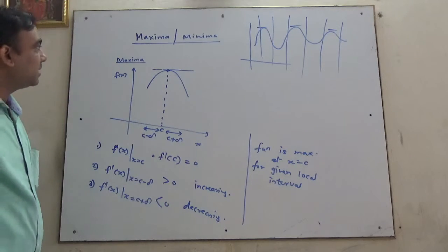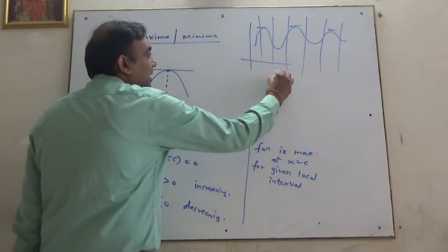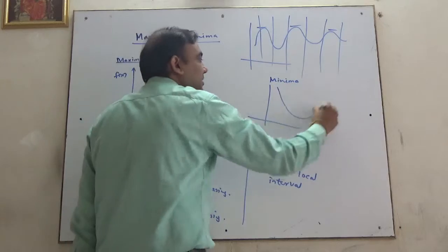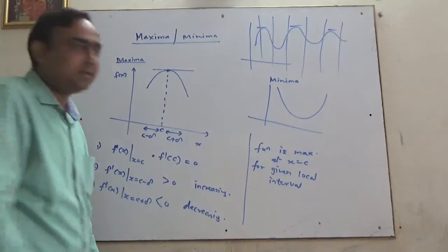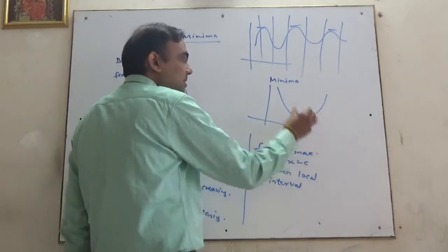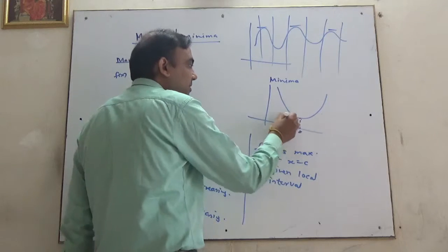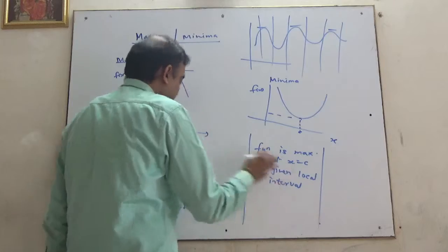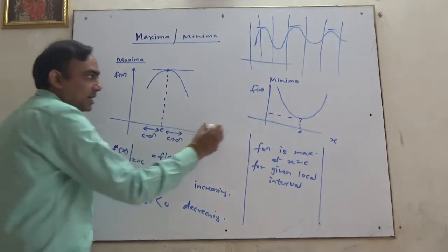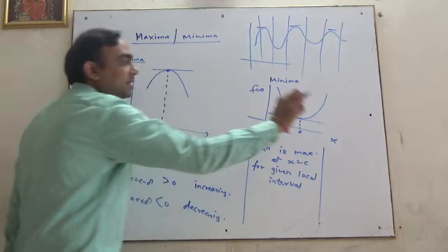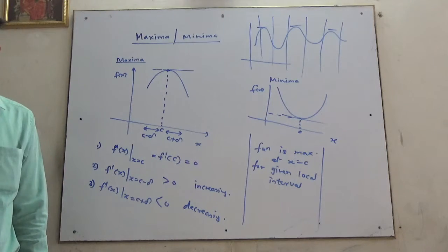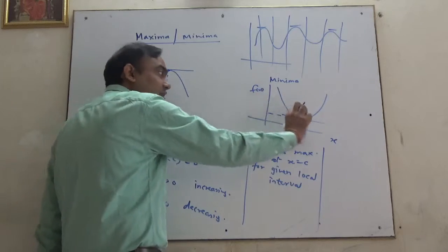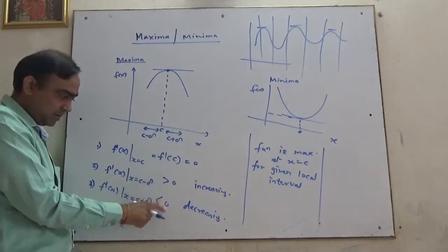That's about maxima. How about minima? For minima, something like this will happen. Local minima - let there be some c, here we have f(x), this is x. What conditions will come? First condition will be, if we take the tangent here, what will be its slope? Zero.